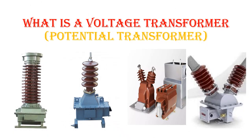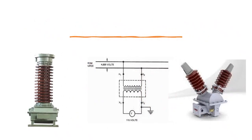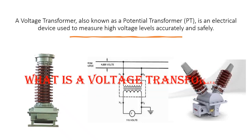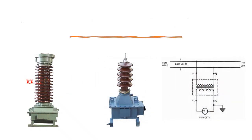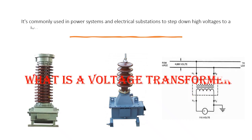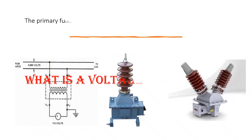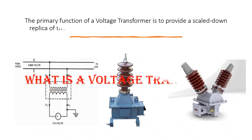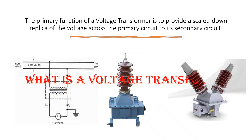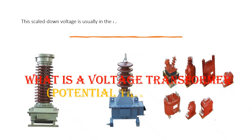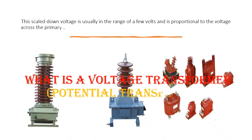A voltage transformer, also known as a potential transformer or PT, is an electrical device used to measure high voltage levels accurately and safely. It is commonly used in power systems and electrical substations to step down high voltages to a lower and more manageable level for measurement, control, and protection purposes. The primary function of a voltage transformer is to provide a scaled-down replica of the voltage across the primary circuit to its secondary circuit, usually in the range of a few volts, proportional to the primary voltage.